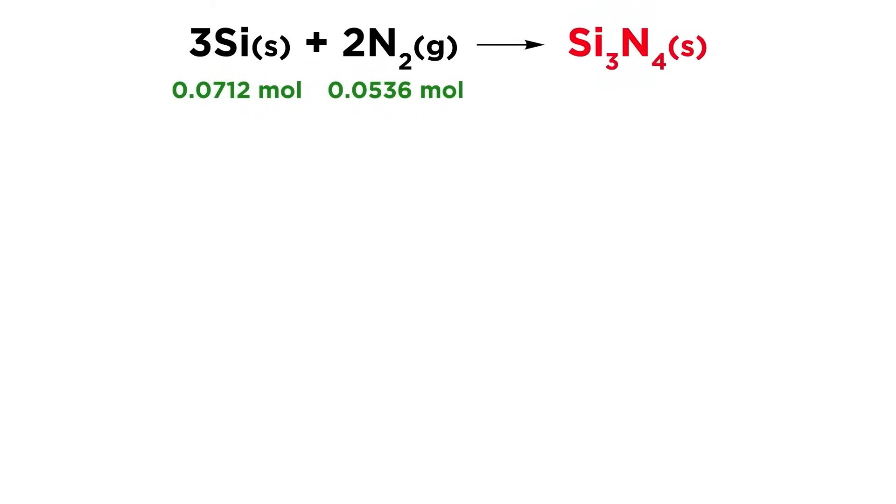Let's look at another strategy that could be used to reach the same conclusion, just to give you some options as to how you want to rationalize this. Let's instead see how many moles of product each of these reactants could potentially generate, by using the stoichiometric ratios between each substance and the product.